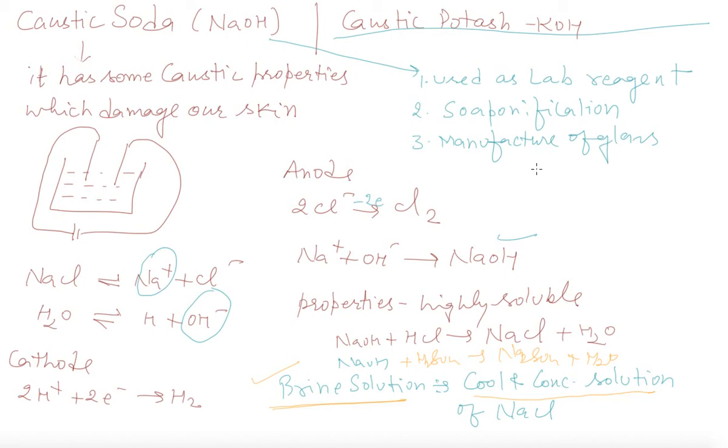Next is sodium chloride NaCl. It is also known as common salt, table salt, or rock salt. It is manufactured by evaporation of sea water.